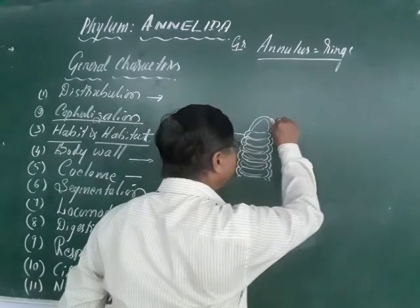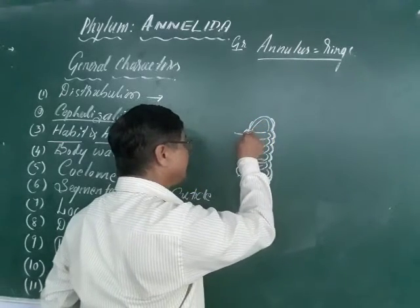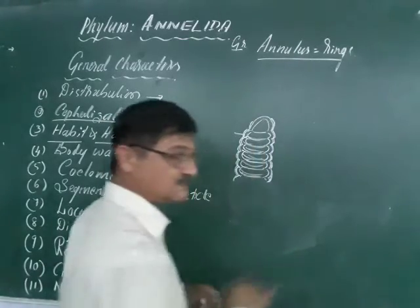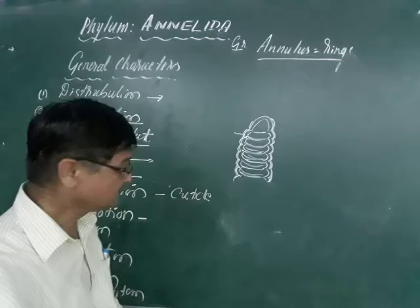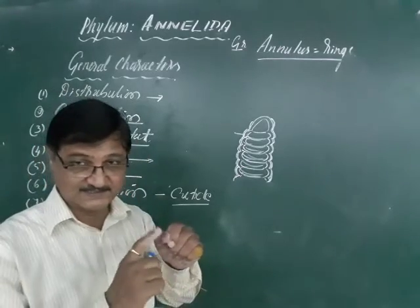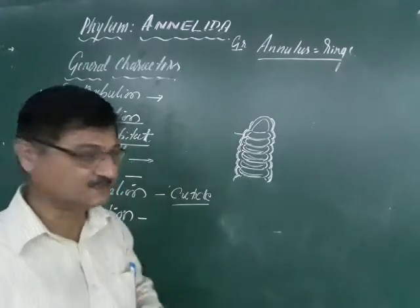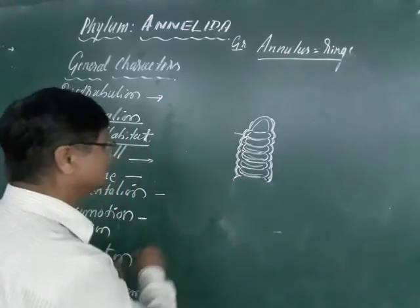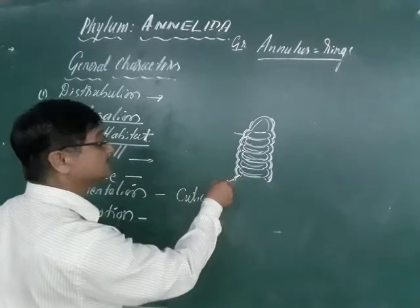The body layer is lined with a thin cuticle. It is a sliming layer that helps in movement — slipping on the surface or inside the burrow. The body is covered by a very thin cuticle, similar to our nails — the outermost hard layer that gives protection to the muscles inside.